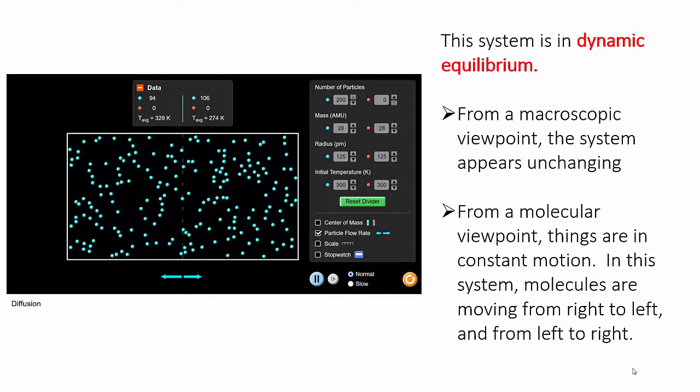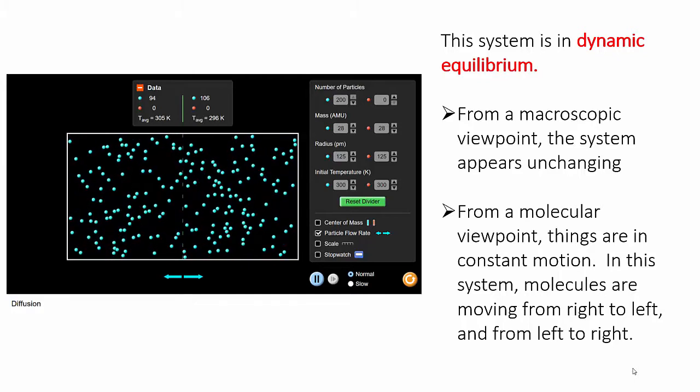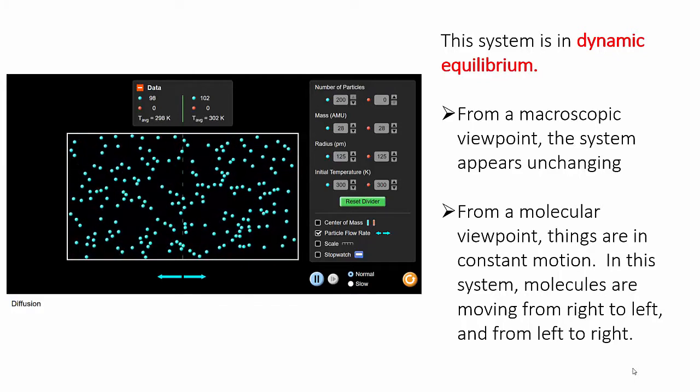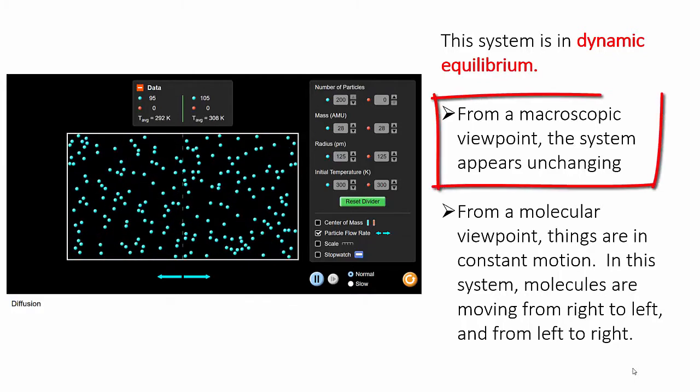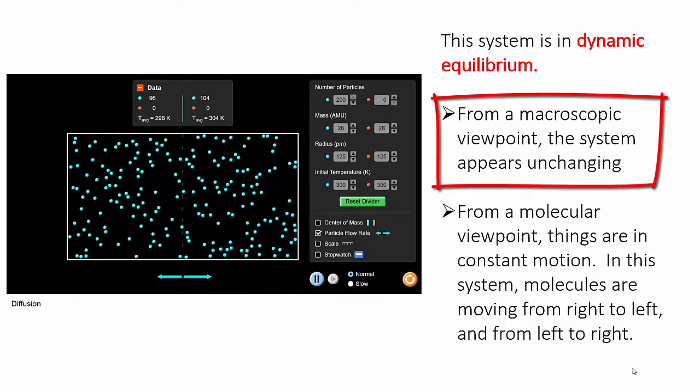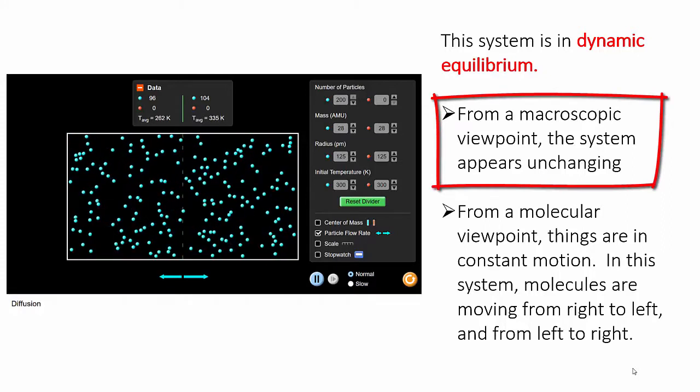There are two key points here. The first is that looking at the system as an average, for instance if you focus on the number of particles on each side, the system doesn't appear to be changing. There are those little fluctuations, but on average it's steady.